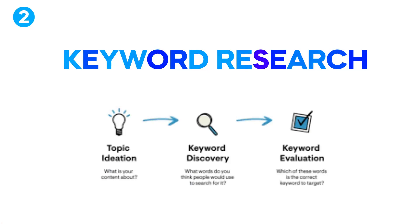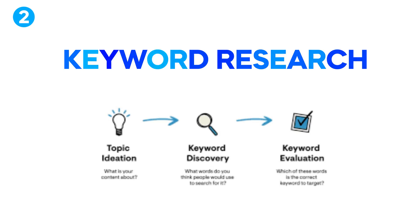Once we've figured out which services we want to go after — normally I recommend one or two, not more than that — we can start doing our keyword research, which is step number two. This allows us to find all the search terms people are typing into Google and which ones we're going to go after. I created an entire video on keyword research that shows you essentially every tool and setting we use to find high buying intent keywords.